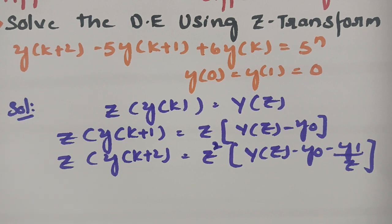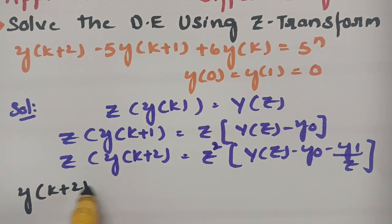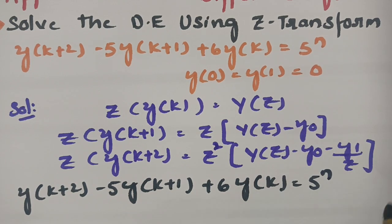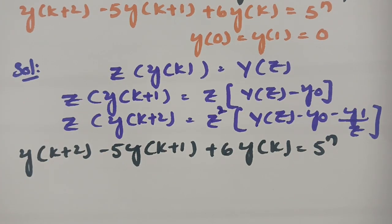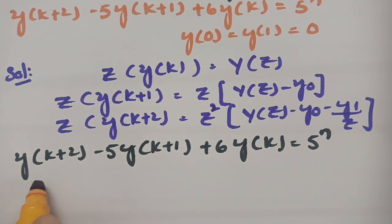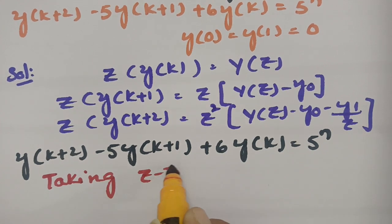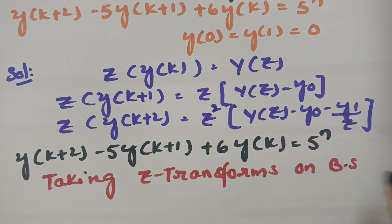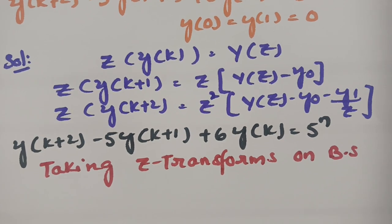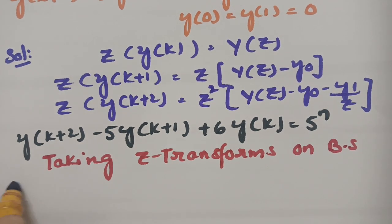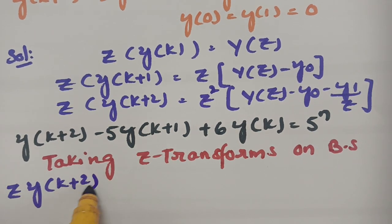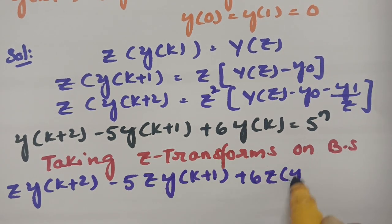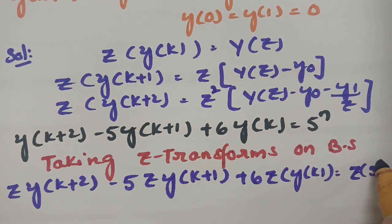From the question, the equation is y(k+2) - 5·y(k+1) + 6·y(k) = 5^n. Taking Z-transforms on both sides: Z{y(k+2)} - 5·Z{y(k+1)} + 6·Z{y(k)} = Z{5^n}.